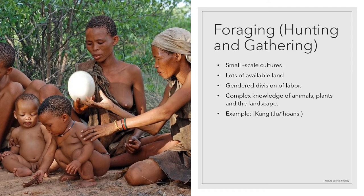Labor in foraging societies is divided by gender and by age, and that's about the only kind of division of labor. People in these societies tend to have a very complex knowledge of animals, plants, and the landscape. People tend to all have the same kind of knowledge of the environment — some people might be better at some things than others, but for the most part everybody can do all the things that are needed to survive.